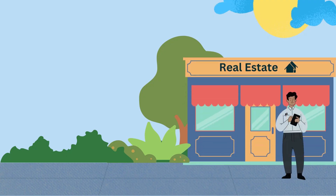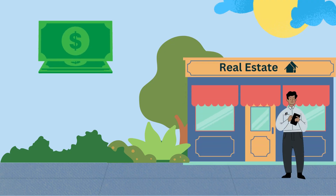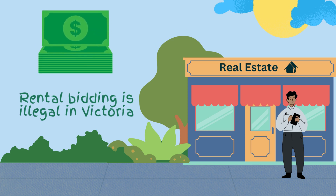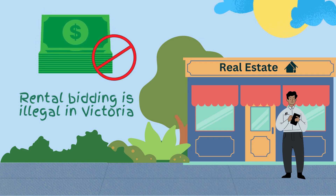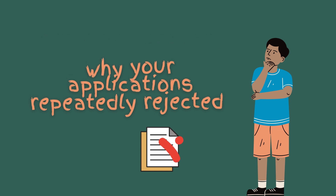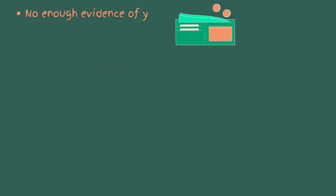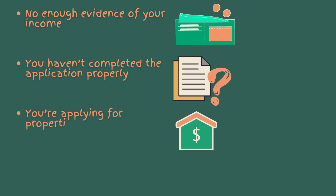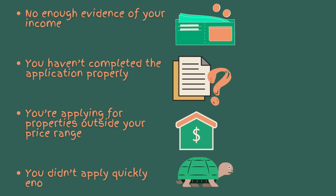It is not uncommon for renters to offer above the asking rental price in the hopes of securing a desired property. This practice is commonly referred to as rental bidding. Rental bidding is illegal in Victoria. These are the most common reasons why an applicant's rental property applications are repeatedly rejected: first, you haven't provided enough evidence of your income; two, you haven't completed the application properly; three, you are applying for properties outside your price range; four, you didn't apply quickly enough.